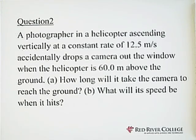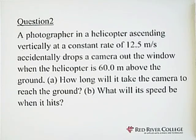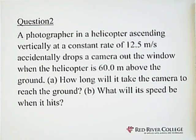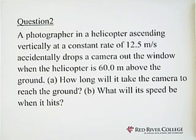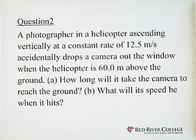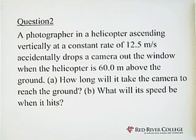This question is about a camera that drops from a helicopter which is ascending vertically at a constant rate of 12.5 meters per second. This is different from a camera dropped from a helicopter that is not moving upward. Because of Newton's first law, we know every object has a tendency to keep its initial motion. So in this case, the camera at the instant it drops from the helicopter has an initial velocity of 12.5 meters per second upward.